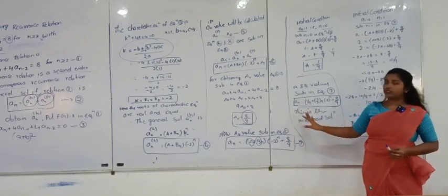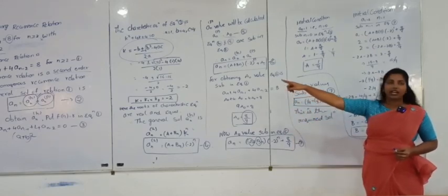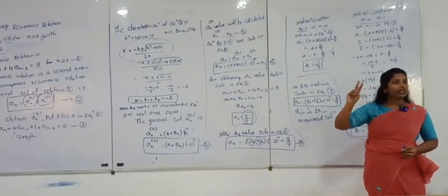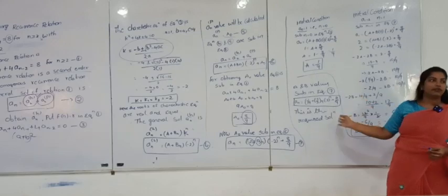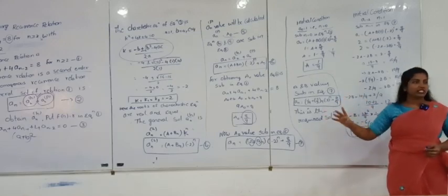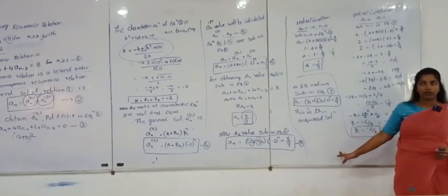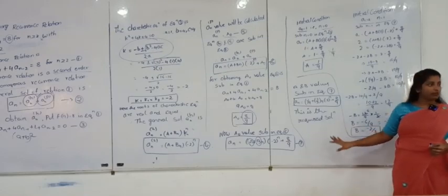The same format applies to similar questions — only the values change. For second order, two initial conditions are given. The format remains the same; only the numbers differ. This is an important question worth 14 marks.